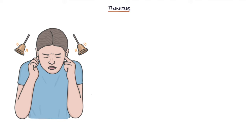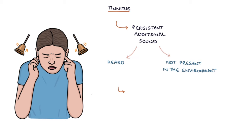Tinnitus refers to a persistent additional sound that is heard but is not present in the surrounding environment. It may be described as a ringing in the ears, but it can also be a buzzing, hissing or humming noise.